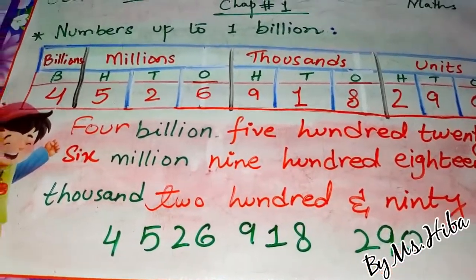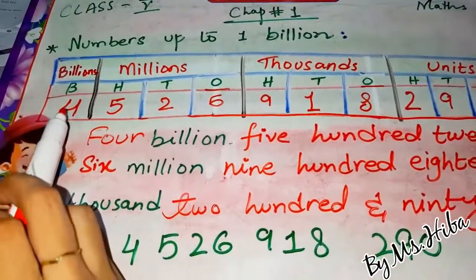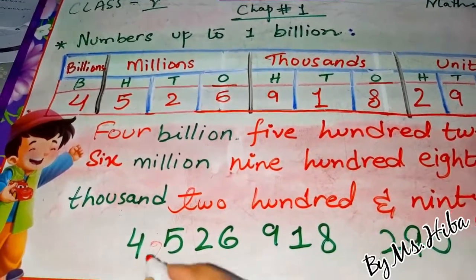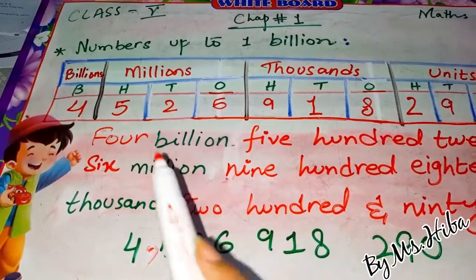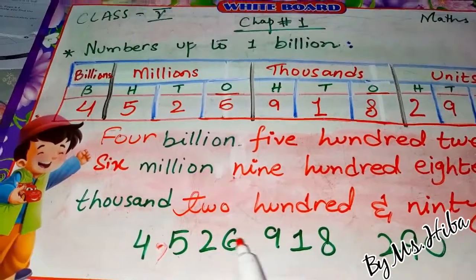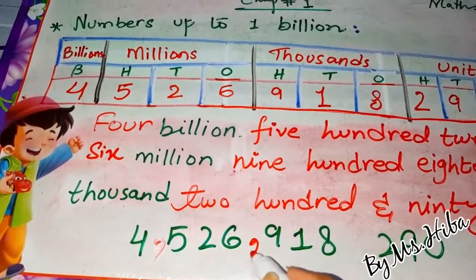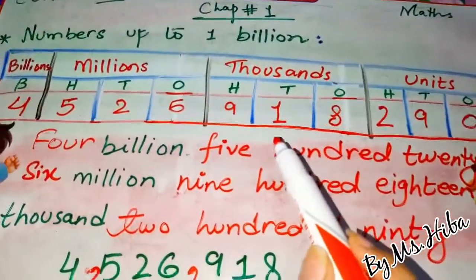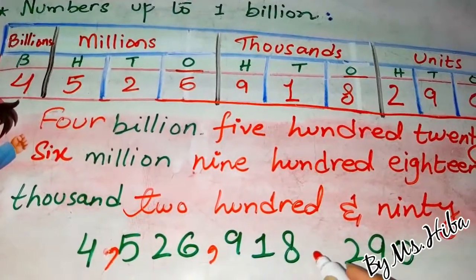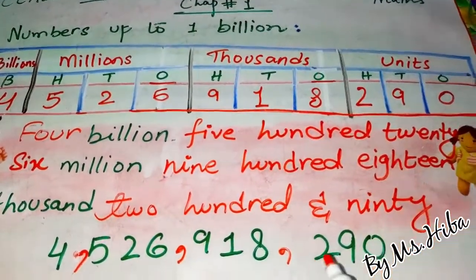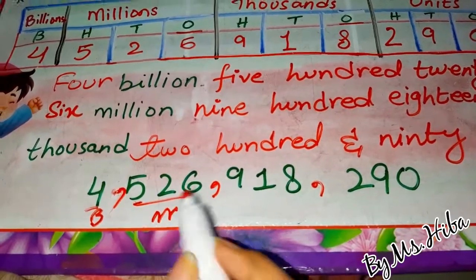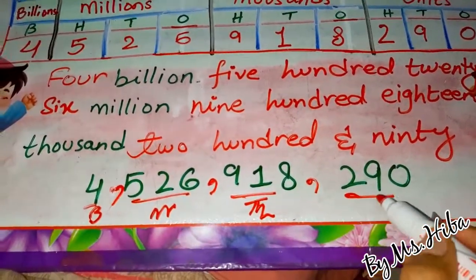Now we have to place commas between these numbers. As we studied previously, we put a comma after each group. There is only one number in the billions group — four — so we put a comma after four. Then we have five, two, six in the millions group, followed by a comma. Then nine, one, eight in the thousands group, followed by a comma. Finally, two, nine, zero in the units group.